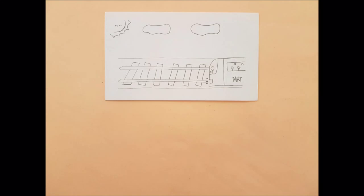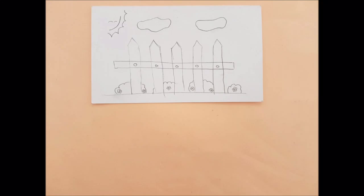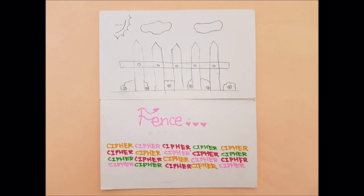The railfence cipher is an easy to apply transposition cipher that jumbles up the order of the letters of a message in a quick, convenient way.